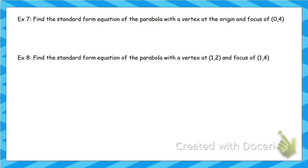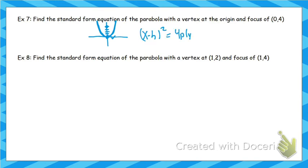Now let's write some equations. Standard form for a parabola with vertex at the origin and focus at (0, 4). I'll graph this: vertex at origin, focus at (0, 4). The focus is above, so it opens up, meaning x is squared. The p value is 4, and since it opens up, it's positive. So the equation is x squared equals 4 times 4 times y, which gives x squared equals 16y. The y-coordinate of the vertex is 0.